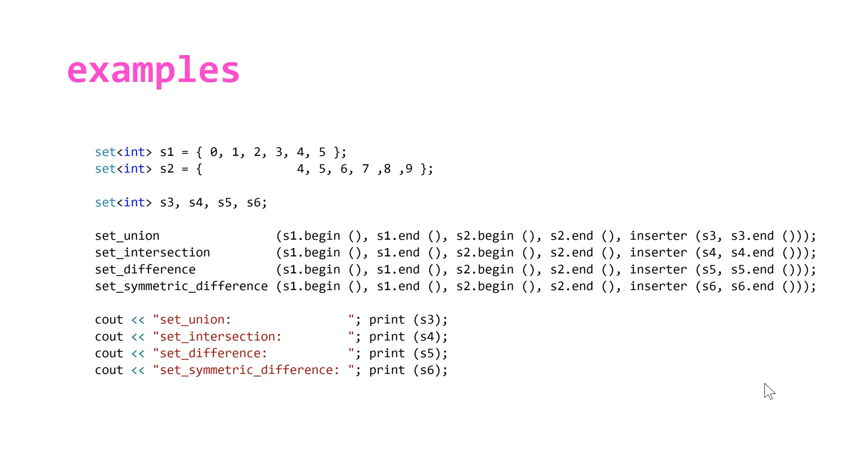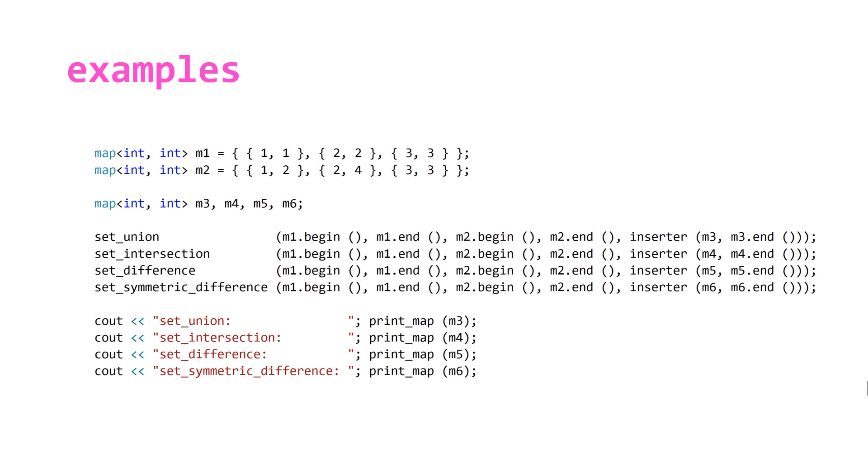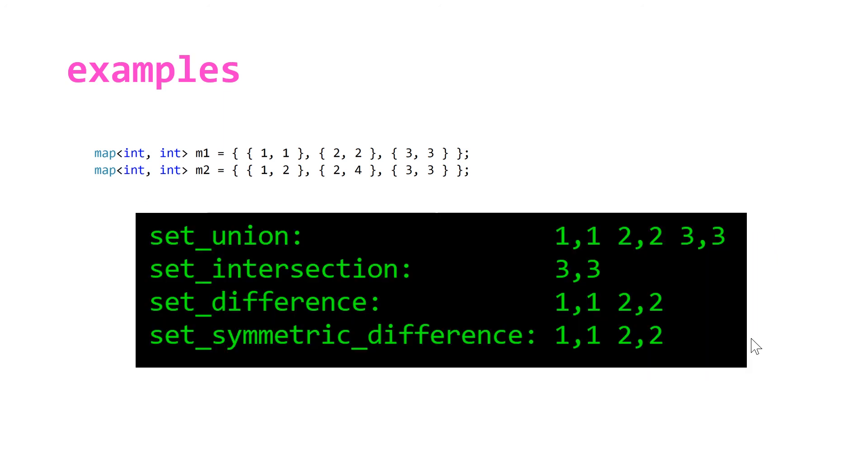For our last example, we're going to get something a little bit more interesting using maps. You can see here I've got two maps, m1 and m2. Their third pair is identical, but their first two pairs share the same keys but not the same values.